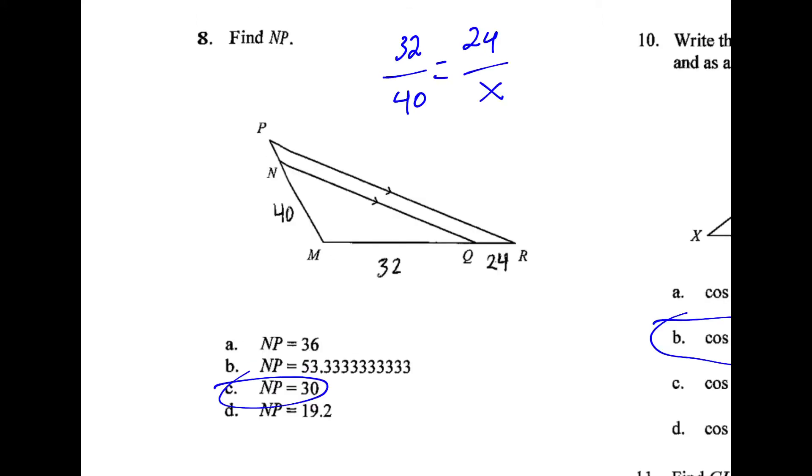There's a couple ways to set up a proportion for number 8, but I chose to say that 32 is to 40 as 24 is to what? And if we cross multiply and solve, you get 30.